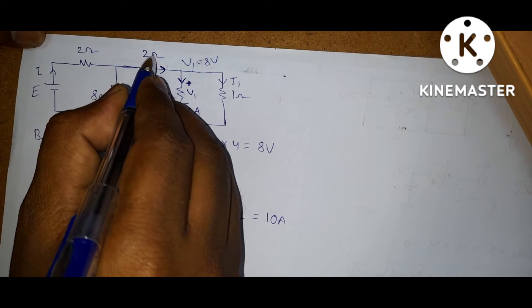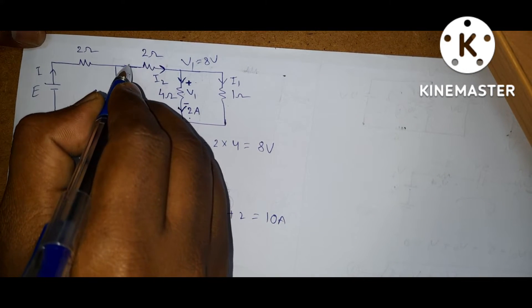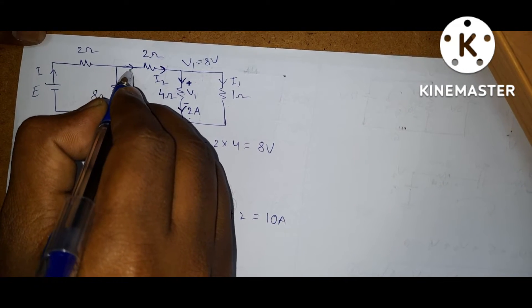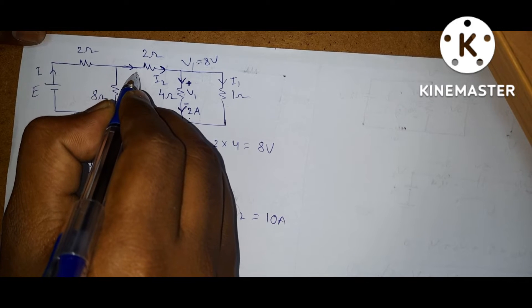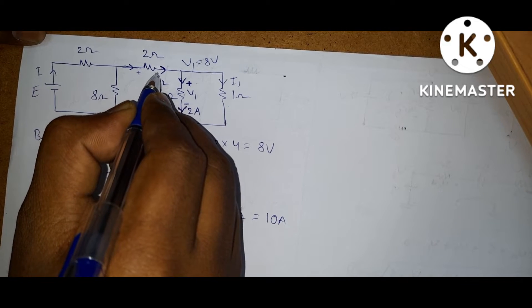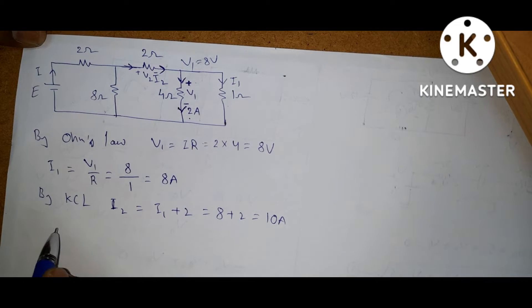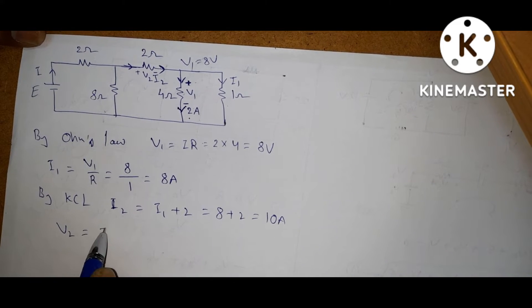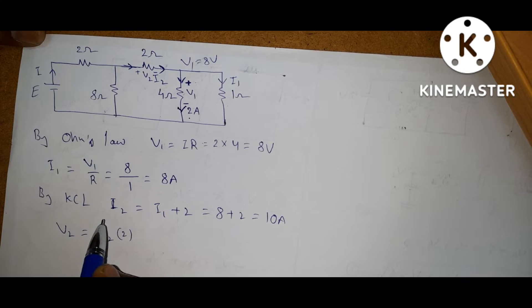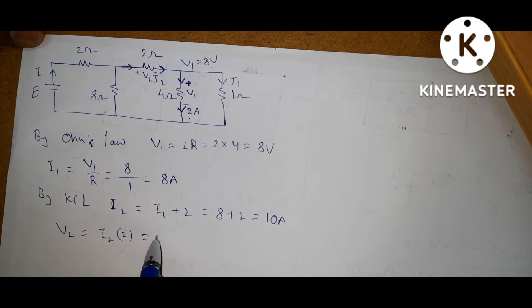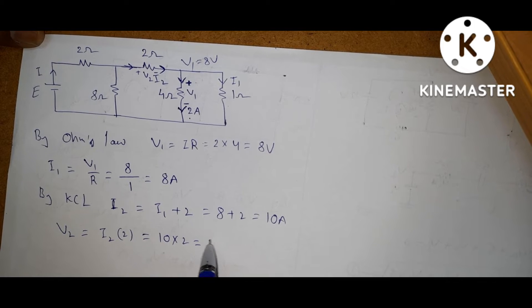Here the current is leaving this passive element, and here it is entering. So where the current enters the passive element, this is positive and this is negative. Let it be V2. What is V2? V2 is equal to I2 into 2 ohms by Ohm's law — I2 into 2, which is 10 into 2, equal to 20 volts.